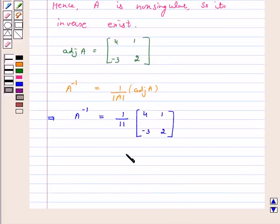Now, we have written our given system of linear equations in the form AX is equal to B. Pre-multiply by A inverse, we get A inverse AX is equal to A inverse B.